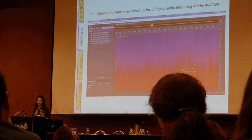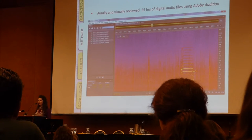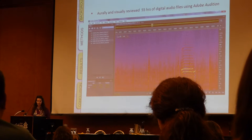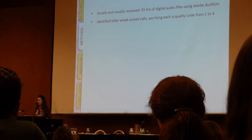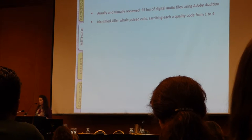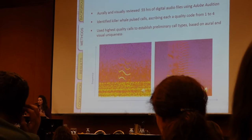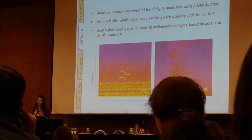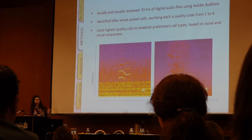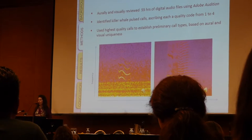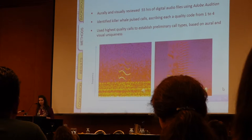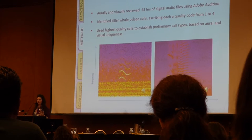I started by aurally and visually reviewing 55 hours of digital audio files using Adobe Audition, which produced spectrograms so that I was able to visually identify and isolate killer whale calls and save them as their own files. As I was doing so, I assigned each call a quality code ranging from one to four, where one represented the highest quality. After completing that review, I looked at only the highest quality calls to establish preliminary call types based on aural and visual uniqueness. You can see two calls on screen that look and sound different — these represent exemplars for two of my preliminary call types.